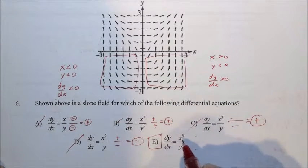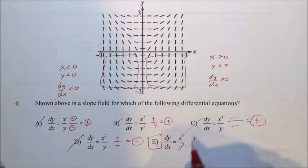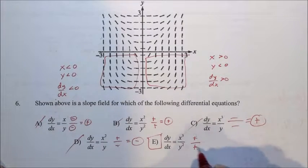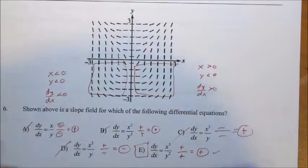But if we verify it, x cubed. Positive cubed is a positive. Y is negative. Negative squared is a positive. Positive divided by a positive is a positive. It checks out.